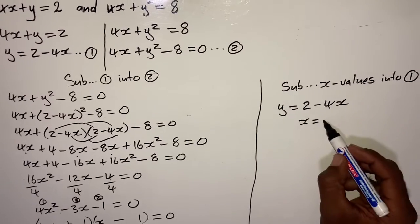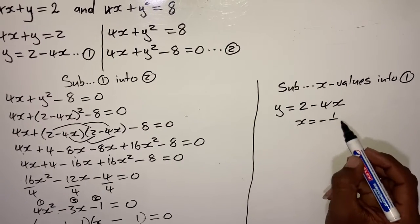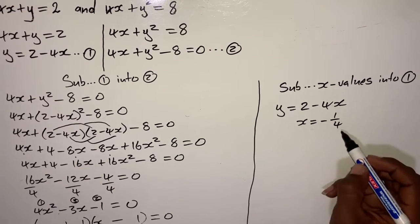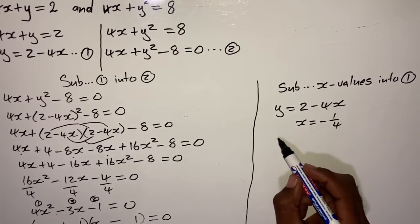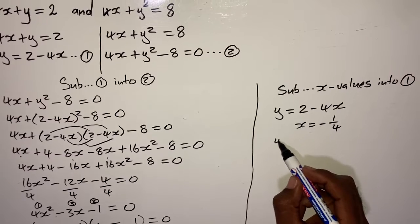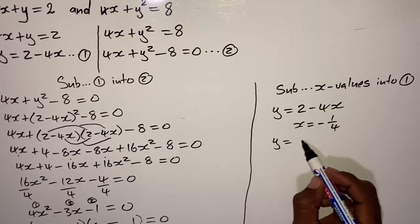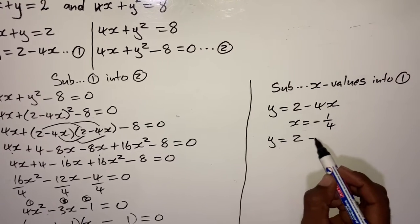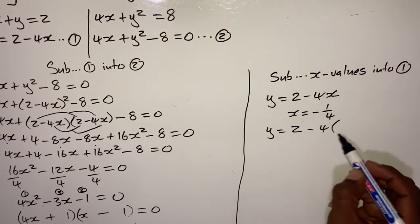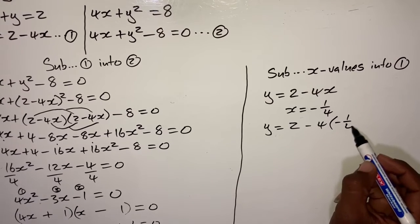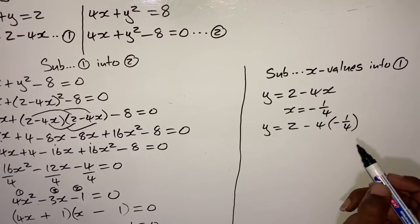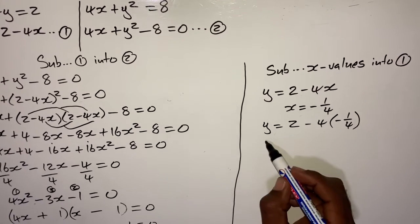We'll then go on to our second sum, still on simultaneous equations. We are still continuing with Solve4x — simultaneous equations. For our second simultaneous equation that is given, we have: 4y minus x is equal to 4, and xy is equal to 8.